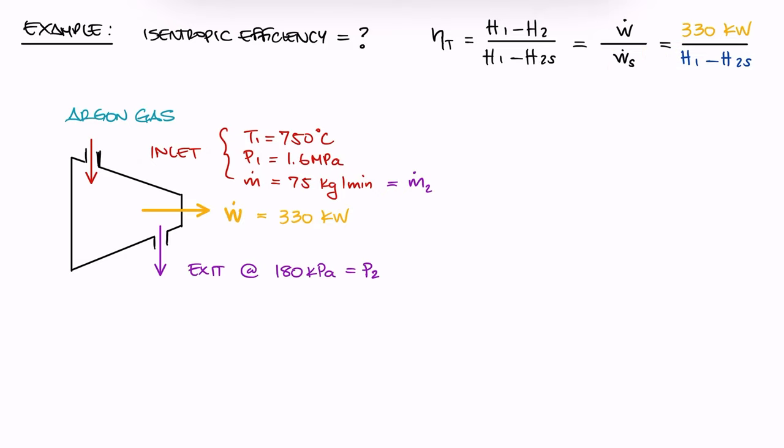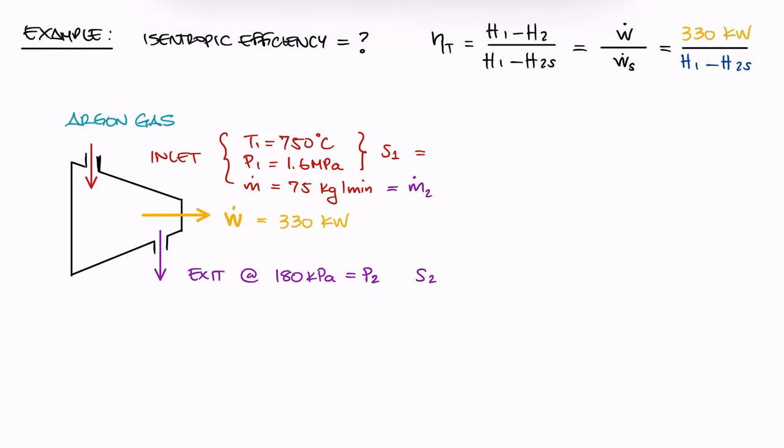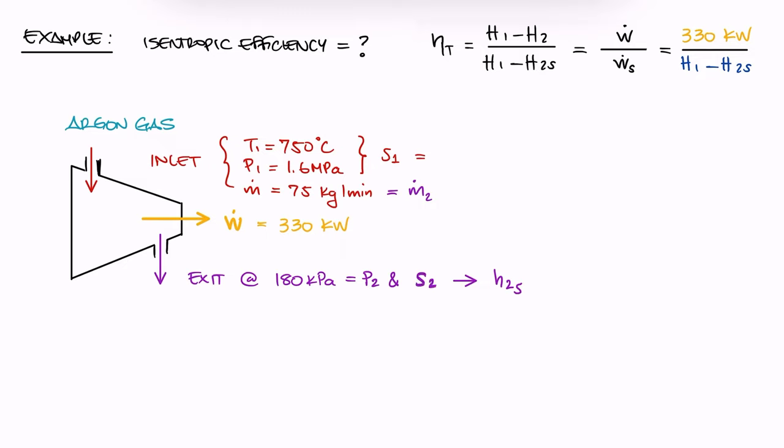Normally, since we have pressure and temperature at 1, we could find the entropy of state 1 S1, and since it's an isentropic process, S2 would be the same. Then with S2 and the given value for P2, we could find H2. This would be H2 s since it's the H2 of the isentropic process. We would use state 1's properties to find H1 and with it calculate W dot s to find the efficiency.